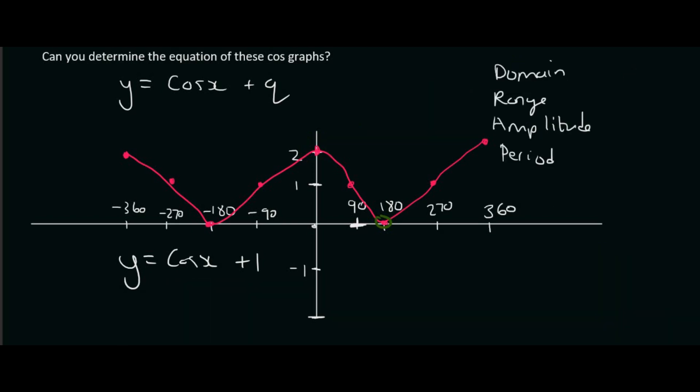Let's take a look at the domain, range, amplitude and period. I keep mentioning these because they do ask this a lot in tests. The domain is the x values, so you look to the left, which is minus 360, and to the right, which is positive 360. Then you say x ∈ [-360, 360]. The range is the y value, so you say y ∈ [0, 2].